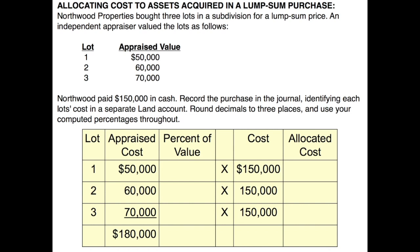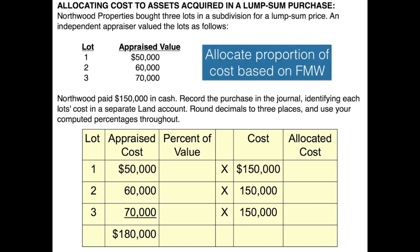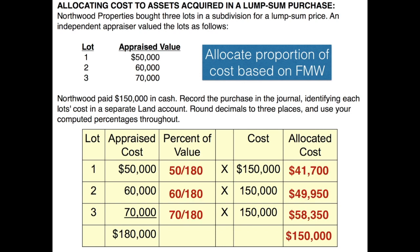What we need to do is find out what percentage of the total value each item represents — we're going to get a ratio. We'll allocate the proportion of cost based on the fair market value from the appraisal. Lot one appraised at $50,000 out of a total $180,000, lot two at $60,000 out of $180,000, and lot three at $70,000 out of $180,000. We then multiply those percentages by the $150,000 we paid, giving us the allocated cost for each lot, which should add up to $150,000 total.